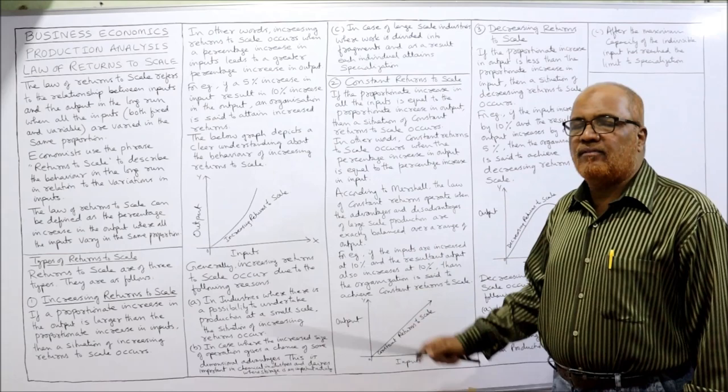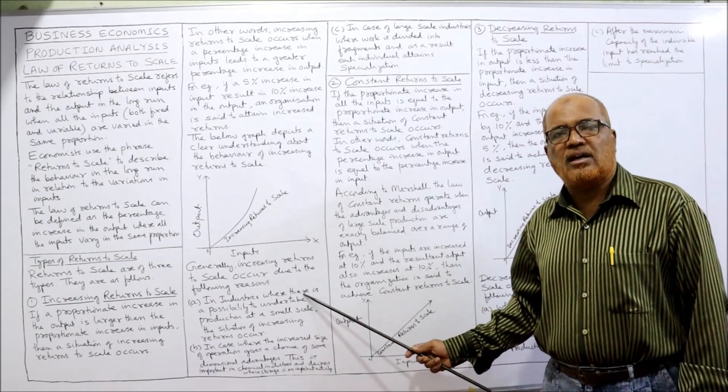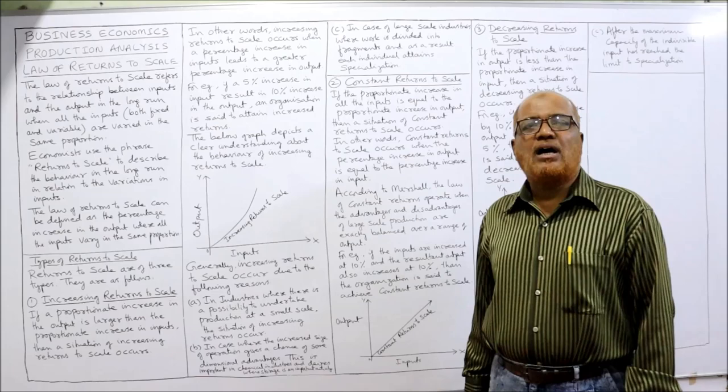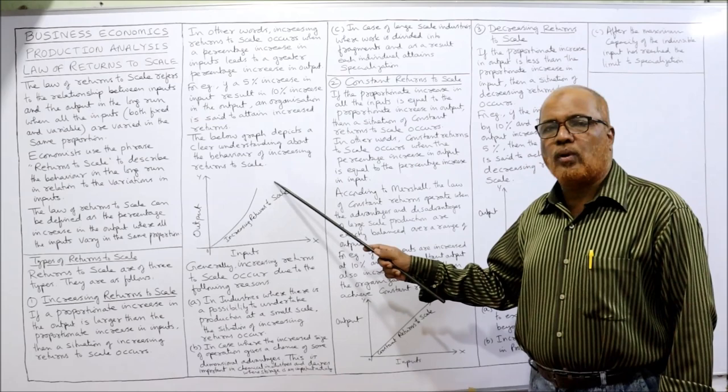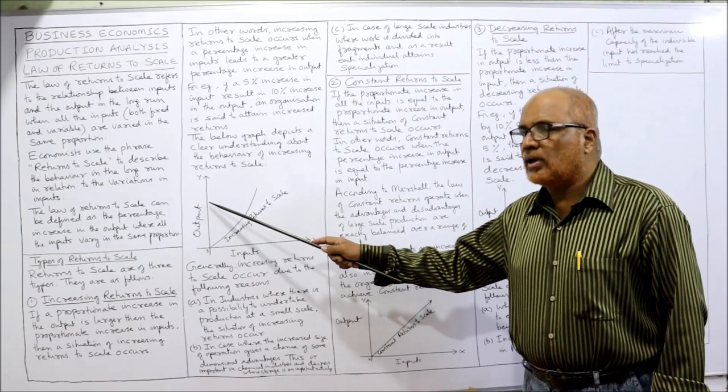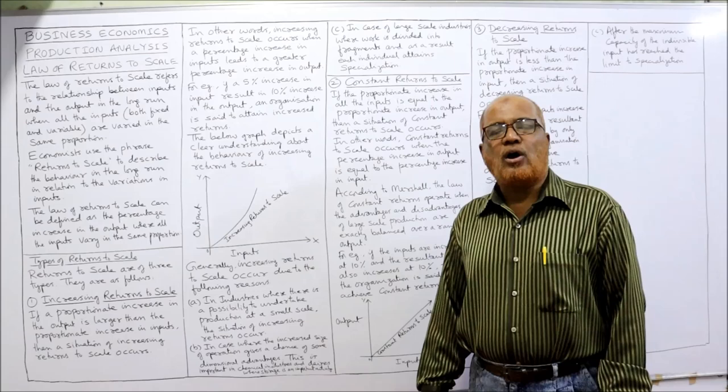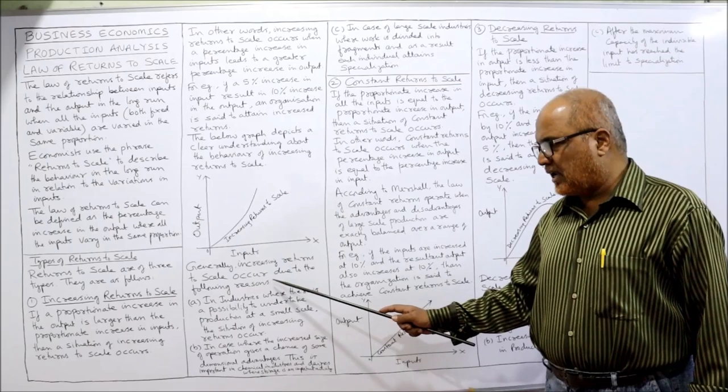The graph depicting increasing returns to scale has input on the x-axis and output on the y-axis. The curve slopes upward from left to right, indicating that as input increases, output also increases. The output is increasing at a very high rate — higher input leads to higher output — showing that output grows disproportionately faster than input.